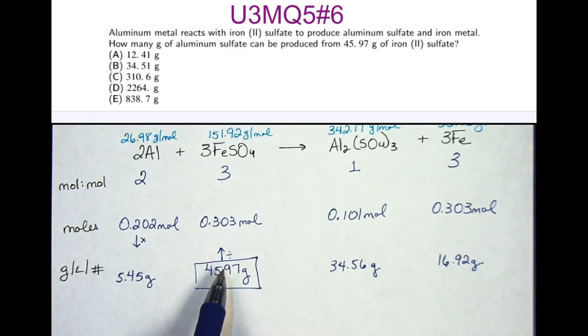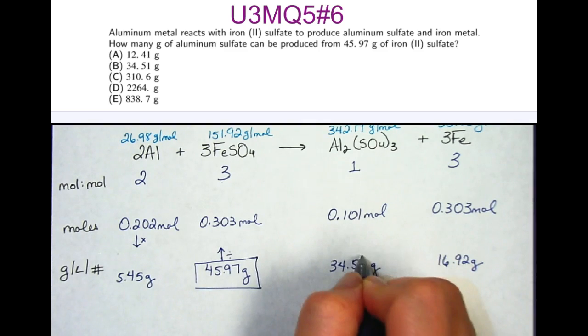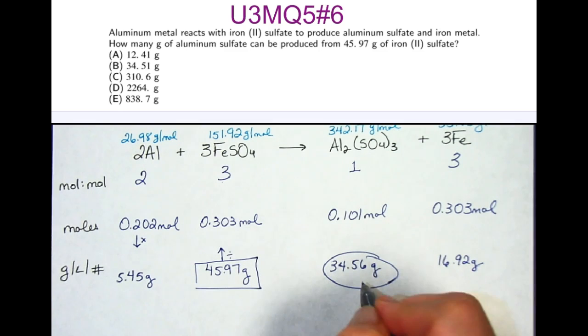So from this one piece of information, we're actually able to determine how much aluminum is going to be consumed and how much of both products are going to be produced. However, the question is asking for this product in particular, which is answer B.